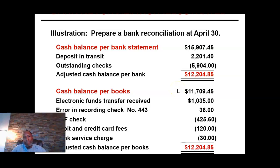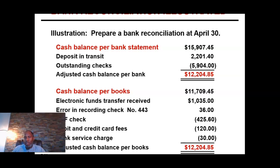For the cash balance per books — the balance shown in your cash ledger account — any items recorded by the bank but not by the company, such as electronic funds transferred, should be added. With errors, it depends on the type: whether it caused the amount to be overstated or understated tells you whether to add or subtract it. Whenever you have an NSF check or any fees charged by the bank, you will always subtract those from the balance per books to get your adjusted cash value.